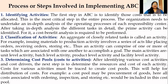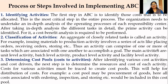The first step in ABC is to identify those costs that are to be allocated. This is the most critical step in the entire process. The organization needs to undertake an in-depth analysis of the operating processes of each responsibility center. After taking this in-depth analysis of the different tasks in detail, the prime activity can be identified, and a cost-benefit analysis is required to be performed.